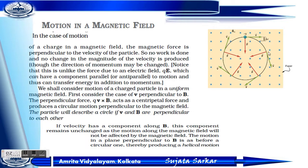When a charge moves in a magnetic field, the magnetic force is perpendicular to the velocity of the particle. So here the net work done is zero. There is no work done and no change in the magnitude of velocity is produced.